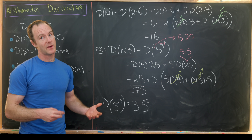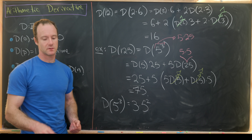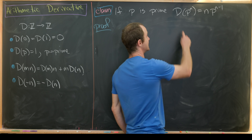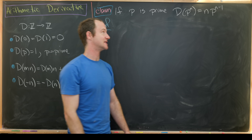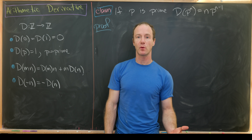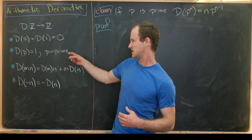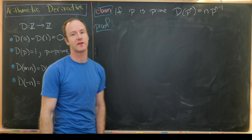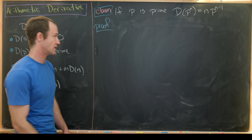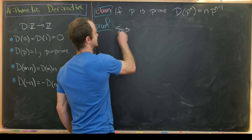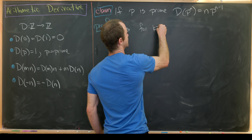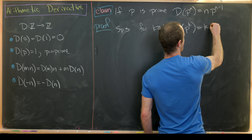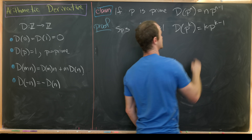Let's make a general claim and prove it. Generalizing the example: if p is prime, then d(p^n) equals n times p^(n−1). We'll prove this by induction, using the base case that d of any prime equals 1, so that's already built in. For the induction hypothesis, suppose for some k ≥ 1 we have d(p^k) equals k times p^(k−1).